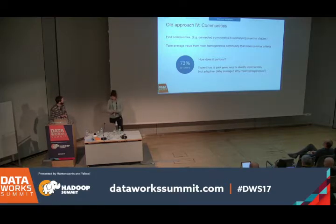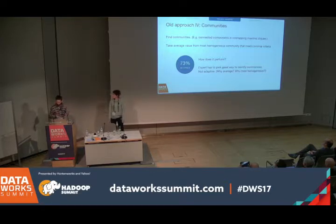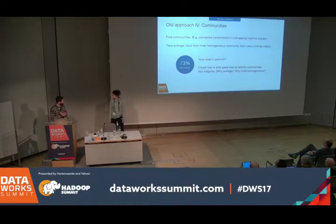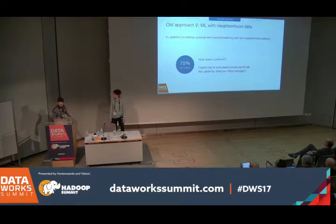So it looks like neighborhood average is a great predictor for this problem. The sum of neighbors, variance, or some other metric could work better for other challenges, but here I really like neighborhood average. I want to use it in my machine learning model as well — as yet another feature. And let's see: 75%.